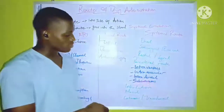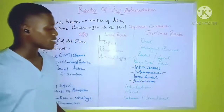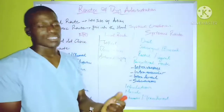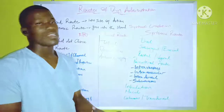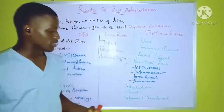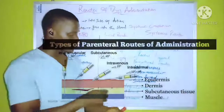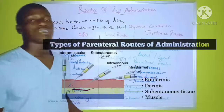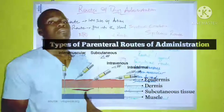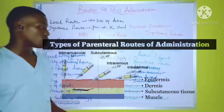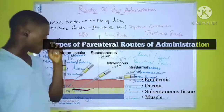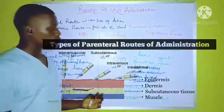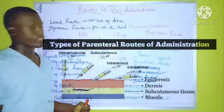The subcutaneous route of drug administration involves the administration of drugs under the subcutaneous layer of the skin. An example of a drug administered through this route is insulin. These drugs are slowly absorbed.